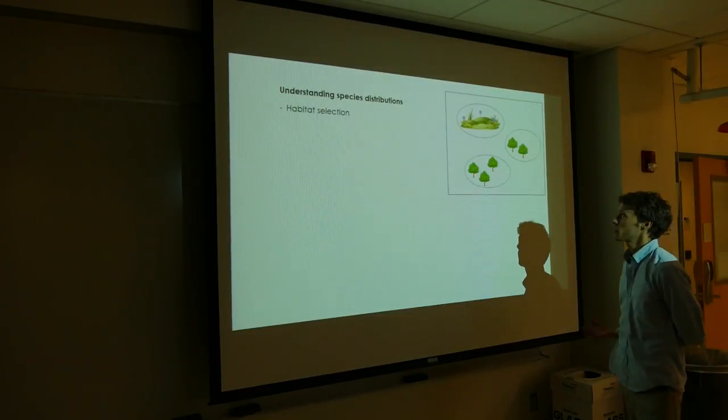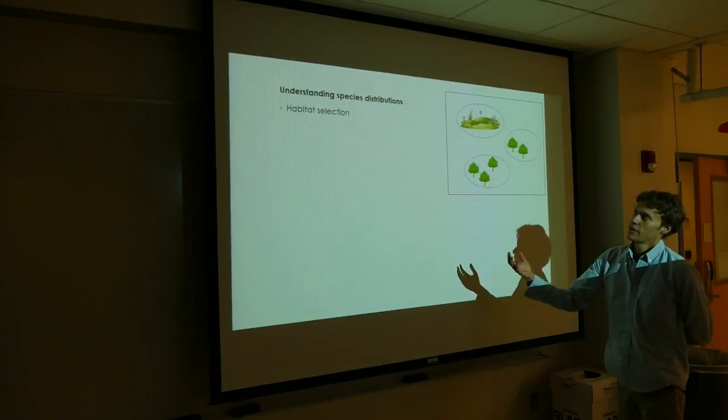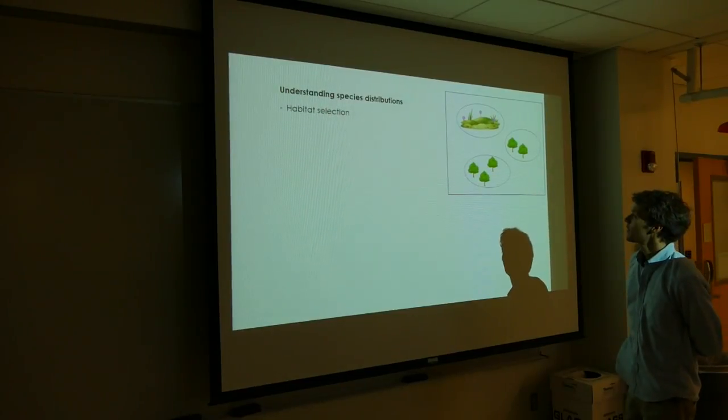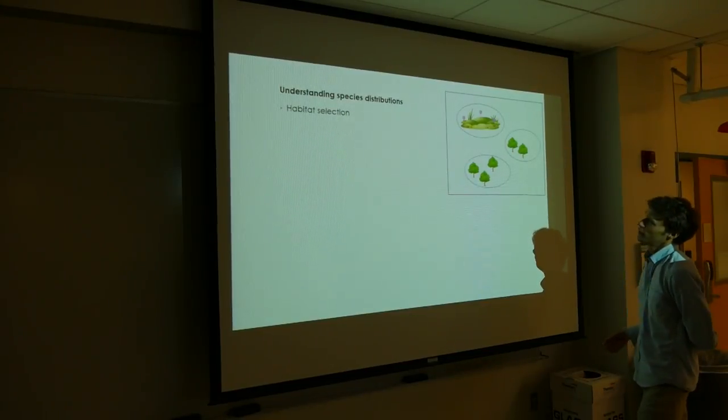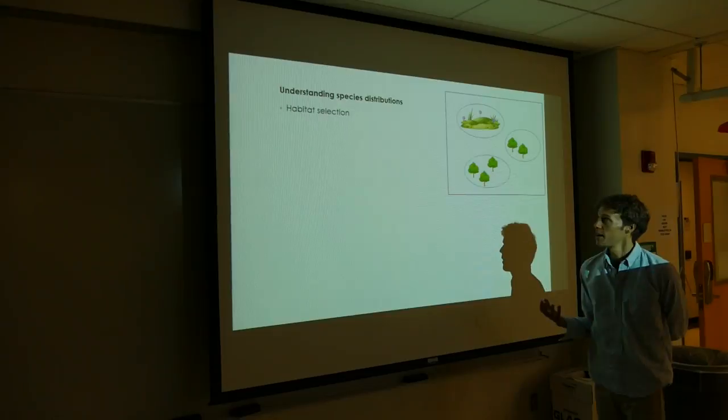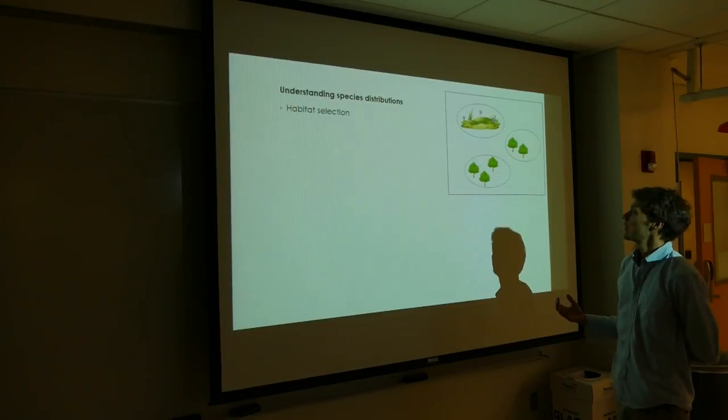Where species are distributed in a landscape is the result of a behavioral process known as habitat selection. Species have evolved to select habitat that increases their overall fitness.